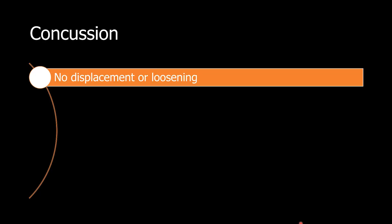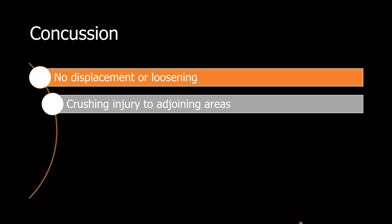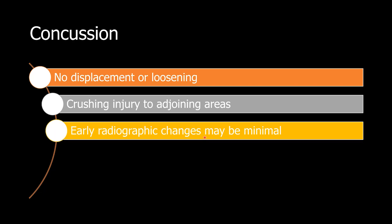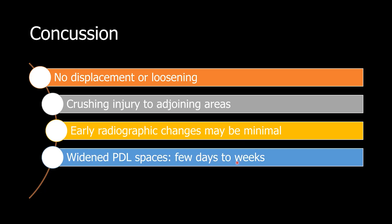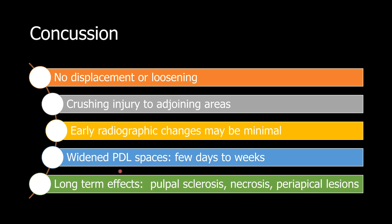Concussion. In concussion, there is no displacement or loosening of a tooth. There is a crushing injury to the adjoining areas, and early radiographic changes may be minimal. In a few weeks or a few days, you might see a widened PDL space, so it makes very good sense to call the patient back for a new radiographic examination. Long-term effects of concussion include pulp sclerosis, necrosis, and periapical lesions.